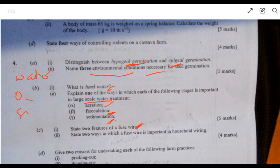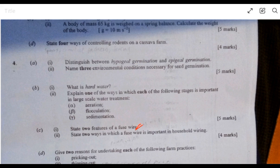4C is asking state two features of a fuse wire. One of the things you can consider is the diameter of the wire, how thick it is, and the material that was used in making the fuse wire. We can also look at the color coding. Some fuse wires may be color coded to indicate the ampere rating, that is the current, the highest amount of current that can flow through it. State two ways in which the fuse wire is important in household wiring. A fuse breaks when there is too much current, so it stops the household appliance from getting burned or damaged.